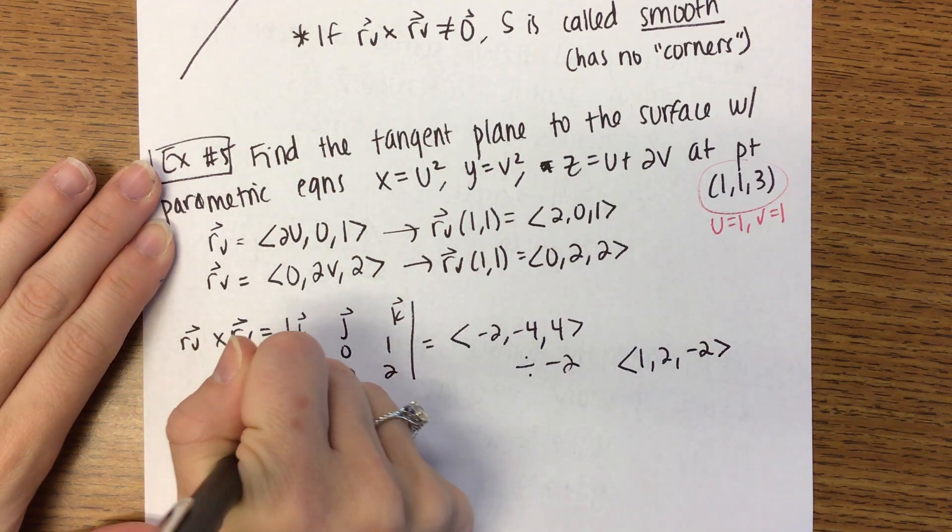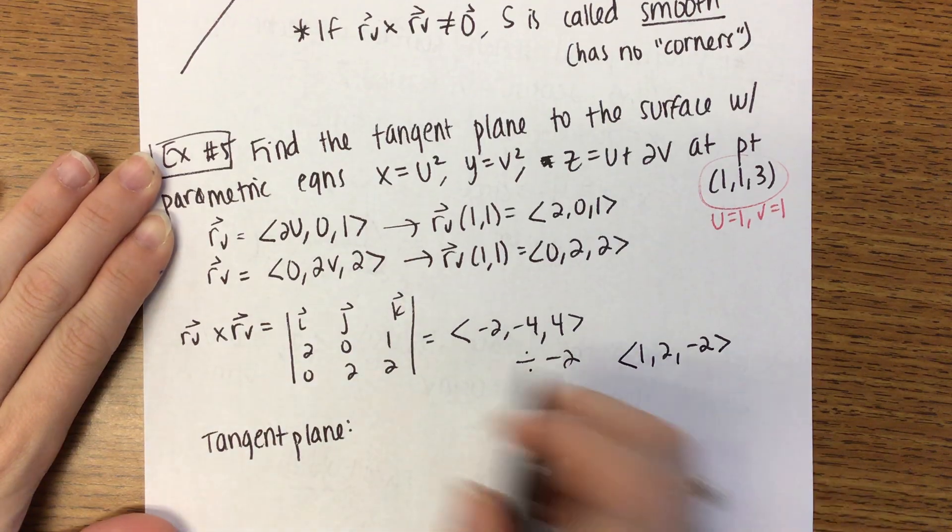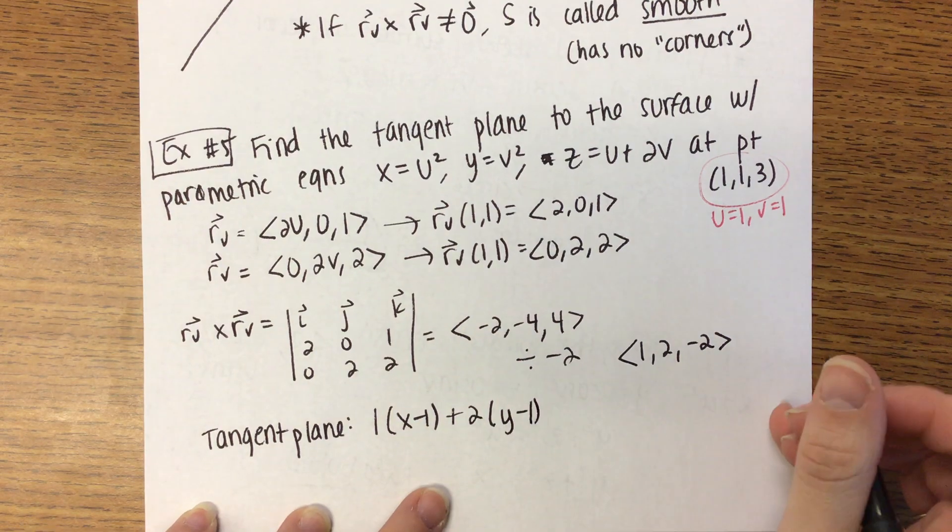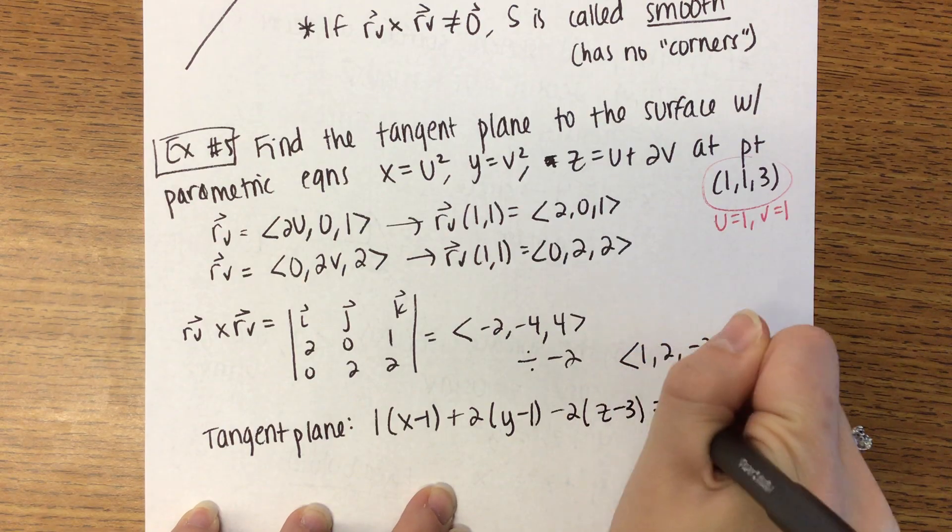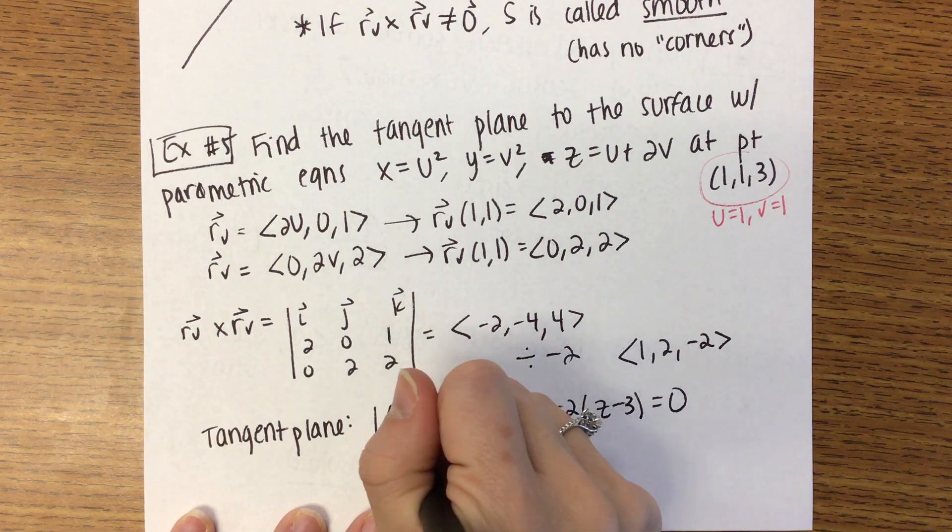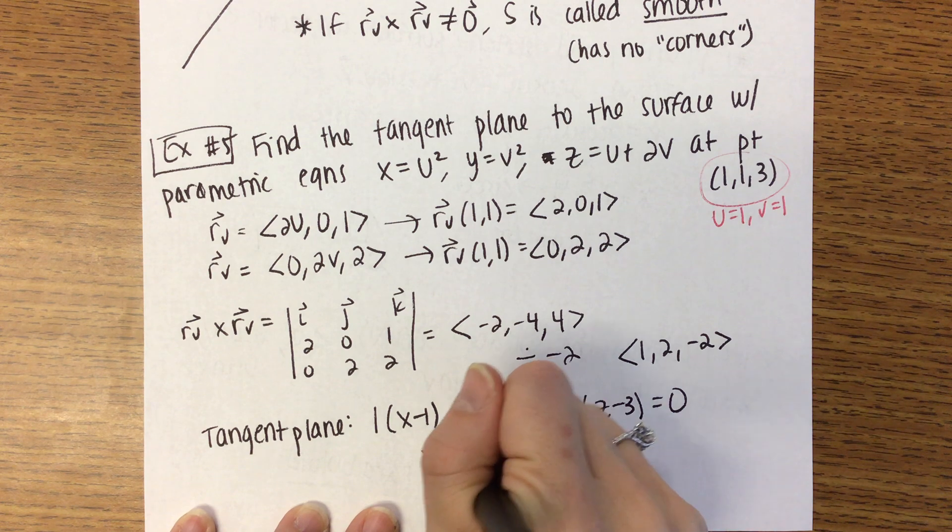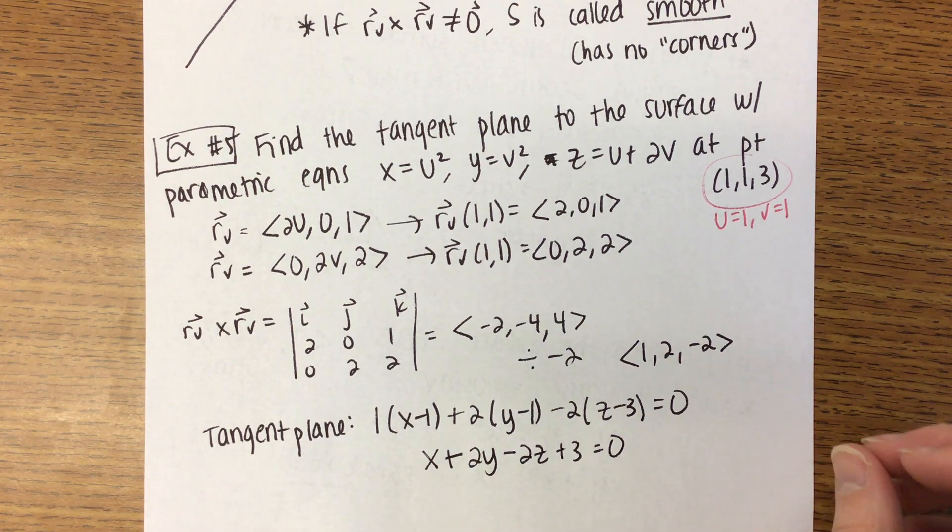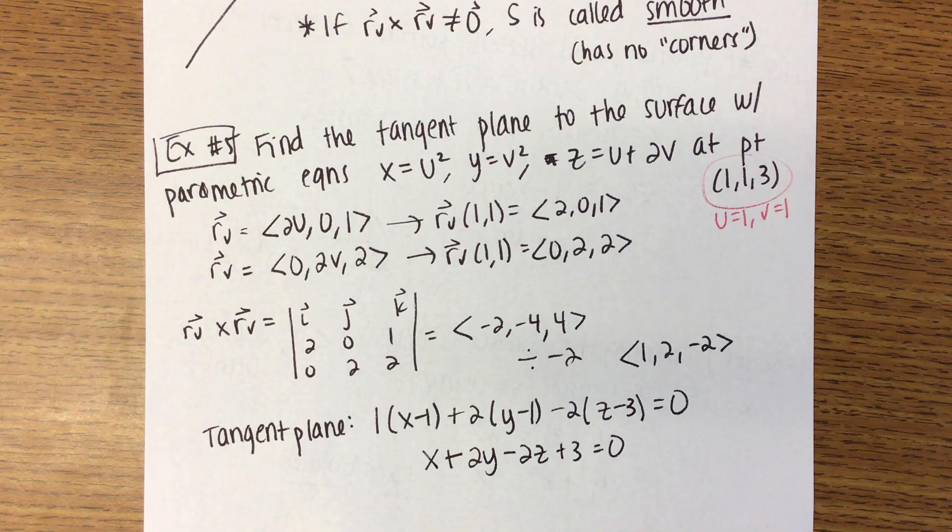So then the equation of our tangent plane becomes 1 times the quantity x minus 1 plus 2 times the quantity y minus 1 minus 2 quantity z minus 3 equals 0. I prefer if you multiply everything out and combine like terms. When you do, you get x add 2y, subtract 2z, plus 3 equals 0. Questions on parametric surfaces? Nothing? You're good. I'm good. You're good.